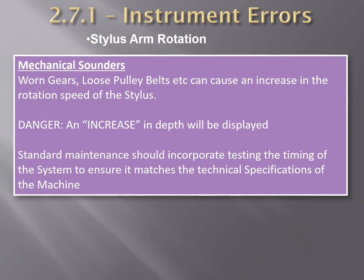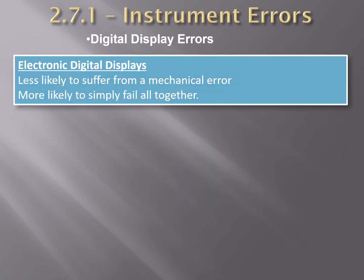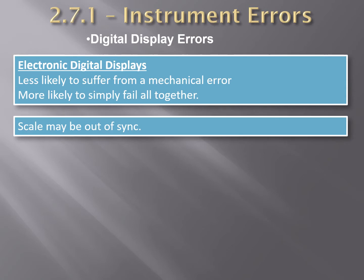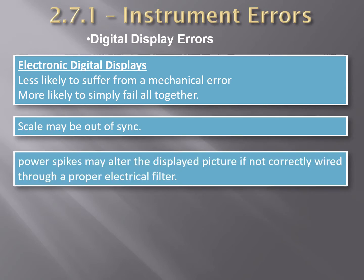The rotation speed can be checked with a stopwatch against the actual speed from the technical specifications in the equipment's manual. This is one of the main checks carried out during routine maintenance of the echo sounder, typically done by shore technicians or electrical officers on board. For digital display types, this error can be equated with power spikes or the picture not being in sync with the display scales, as sometimes seen on computer screens.